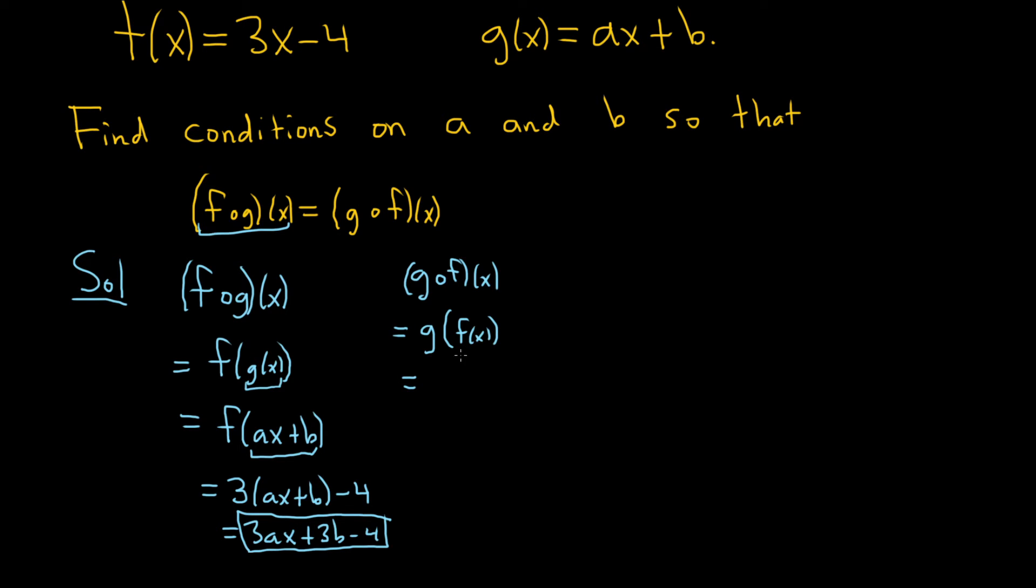And as before, we replace the inside piece. So the inside piece here is 3x minus 4. So that's our f, right? So we're going to replace that. So it'll be g of 3x minus 4.